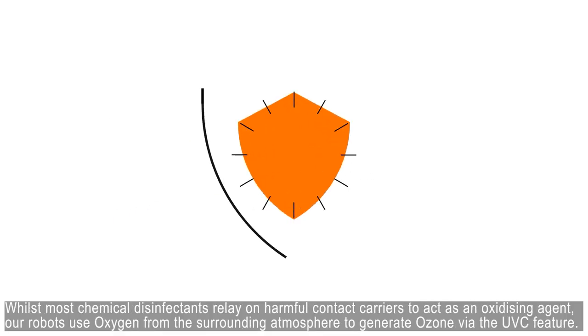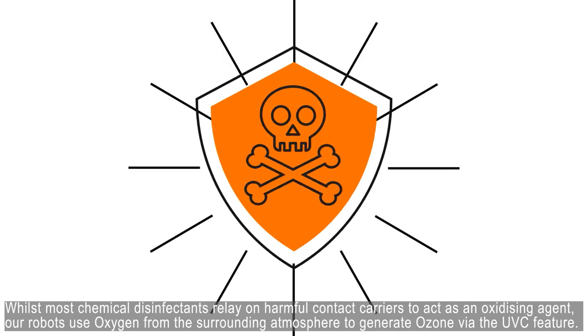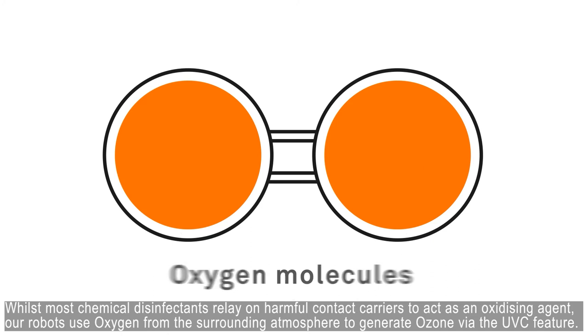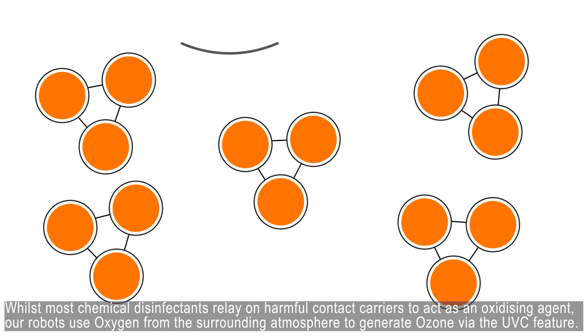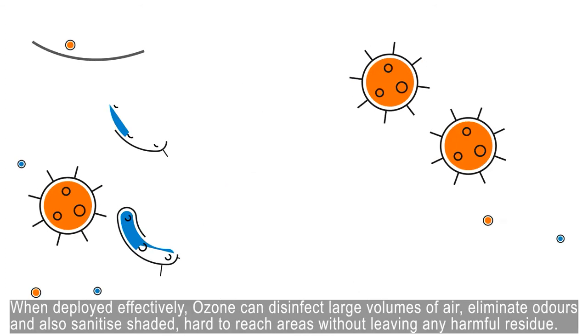Whilst most chemical disinfectants rely on harmful contact carriers to act as an oxidising agent, our robots use oxygen from the surrounding atmosphere to generate ozone via the UV-C feature.